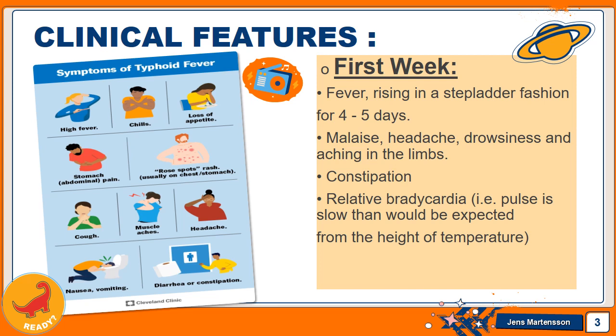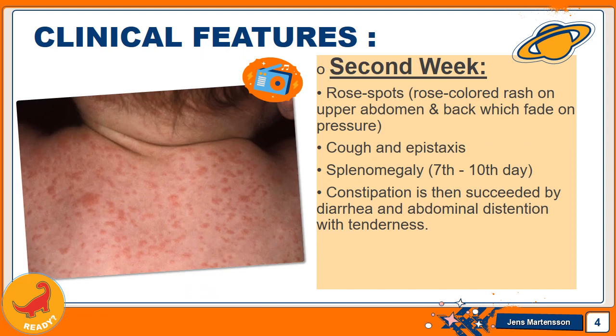Normally there is a 10-beat rise in pulse with every 1 degree Celsius rise in temperature, but in relative bradycardia that is not the case. The second week is characterized by the presence of rose spots rash, which is a maculopapular rash. It is rose colored, present on the upper abdomen and back, and it fades on pressure — that is, it is a blanching rash.